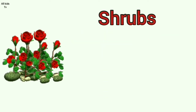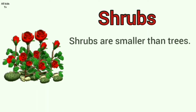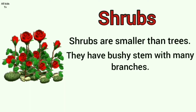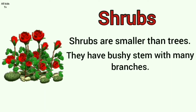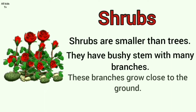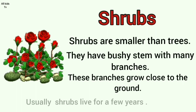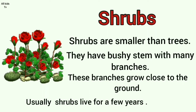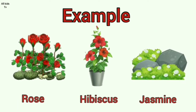Shrubs. Shrubs are smaller than trees. They have a bushy stem with many branches. These branches grow close to the ground. Usually shrubs live for a few years. Some examples of shrubs are rose, hibiscus and jasmine.